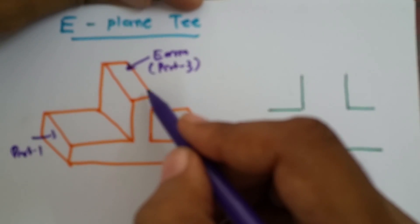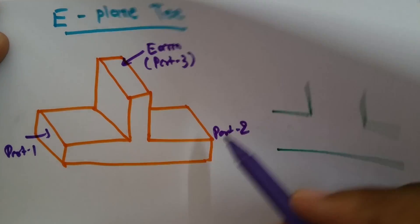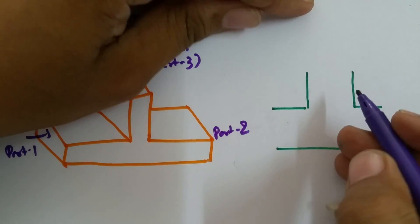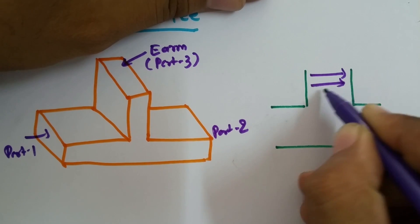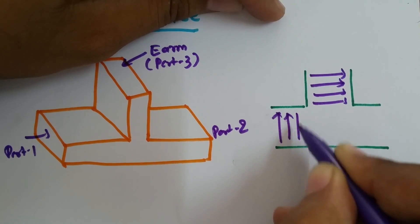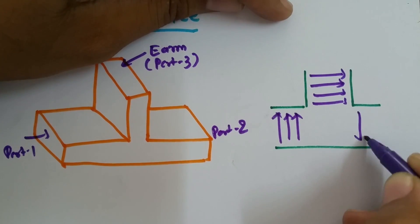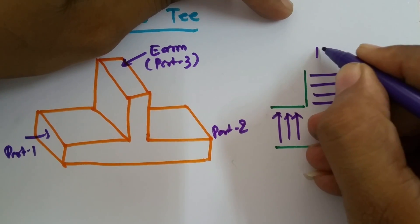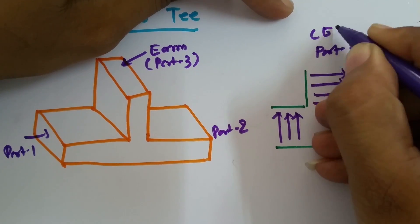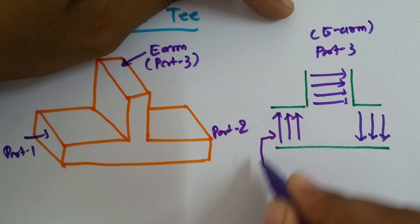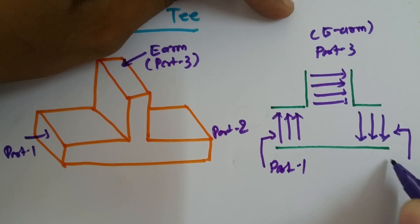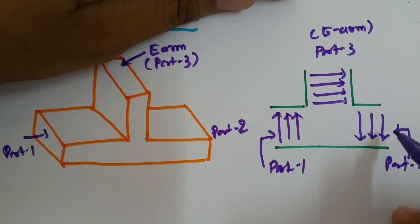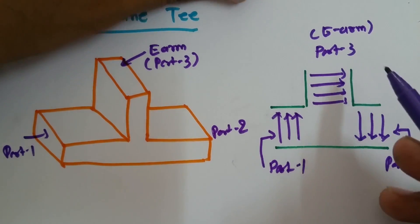If input is given from the E-arm, output at port 1 and port 2 will be the same but out of phase, and reflection at port 3 ideally will be 0. If the electric field is in this direction, output at port 2 will be in the opposite direction. So output at port 1 and port 2 will be out of phase, and return loss at port 3 will be 0.